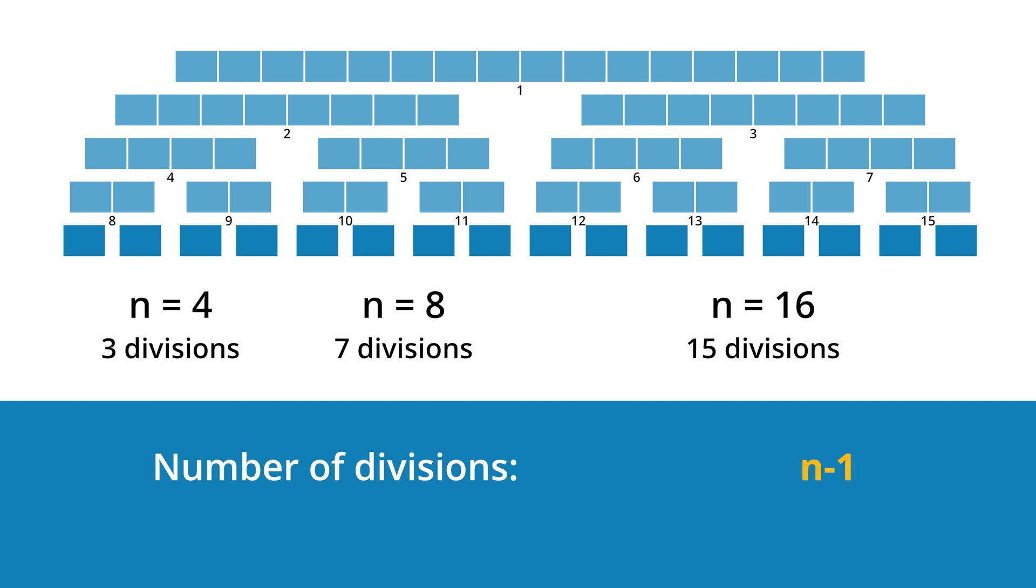For each division, we have to determine the middle of a list. The cost for this is constant. But constants are irrelevant for the big O notation, including the minus 1. And we get, as the time complexity of the division phase, order n.